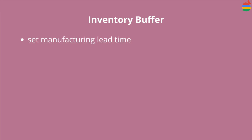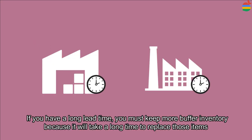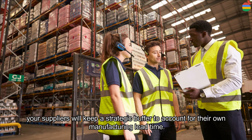Here are some examples of strategy buffers. A factory typically sets an inventory buffer for manufacturing lead time, which is the amount of time it takes to make the product. The buffer allows you to fill orders immediately when customers need products right away. If you have a long lead time, you must keep more buffer inventory because it will take a long time to replace those items. Your supplier will also keep a strategic buffer to account for their own manufacturing lead time.